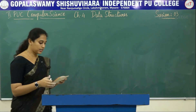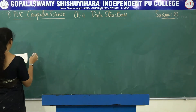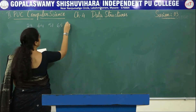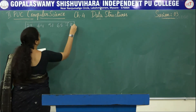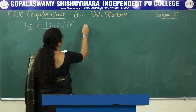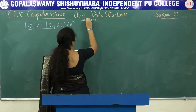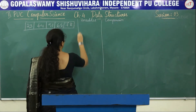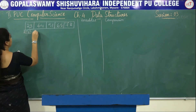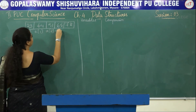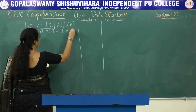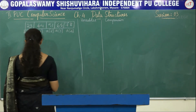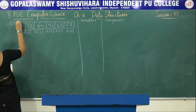Next, we are going to trace this array using binary search: 23, 44, 51, 65, and 78. The search element is 35.